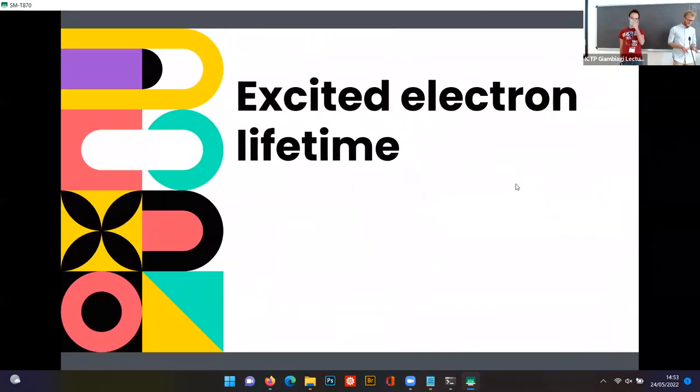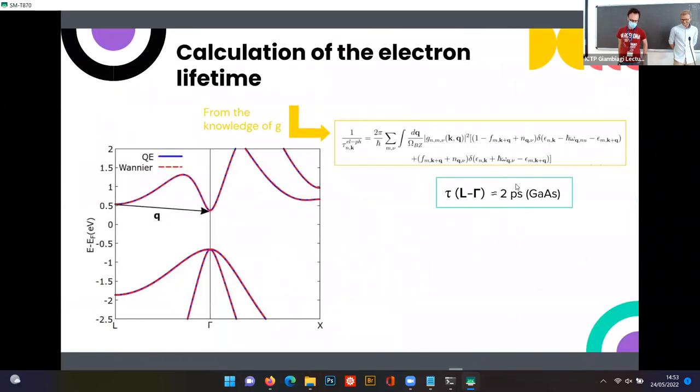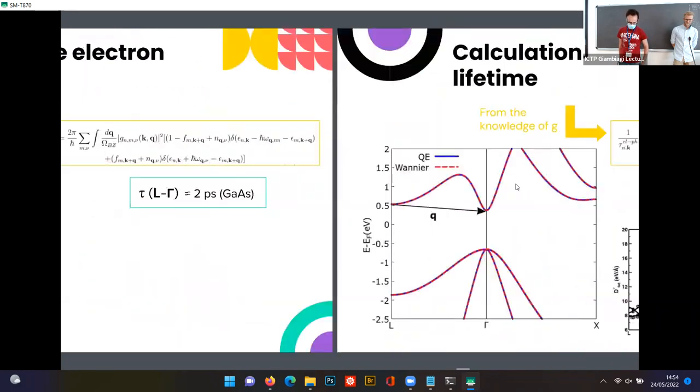EPIc is also able to calculate, for example, excited electron lifetime, always thanks to the knowledge of electron-phonon matrix elements and the possibility to interpolate them on a very fine mesh both regarding q and k points. What you can do is calculate the deexcitation of excitation, for example in semiconductors. This is the case of gallium arsenide, for example, and the excitation in the L valley and the time how much it survives due to the electron-phonon scattering. We obtained two picoseconds which is pretty good comparison to the experimental values ranging from 1.5 to 2.5 picoseconds.